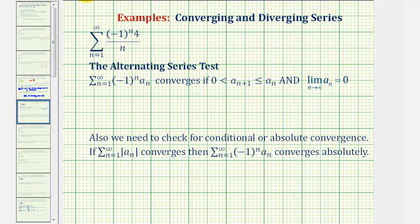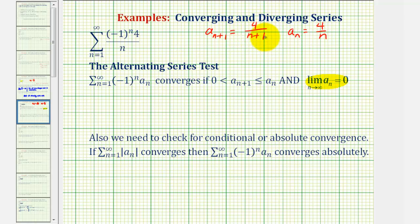From the nth term divergence test, we've already satisfied the limit requirement. So now we just need to make sure the inequality condition is also true. Again, a sub n is equal to four divided by n, and therefore a sub n plus one is equal to four divided by n plus one. Notice that n is always going to be positive, and therefore both fractions will always be greater than zero.